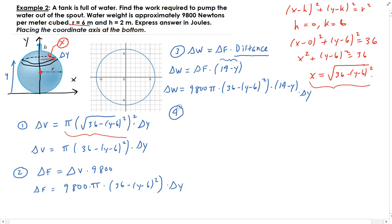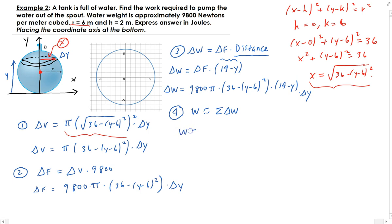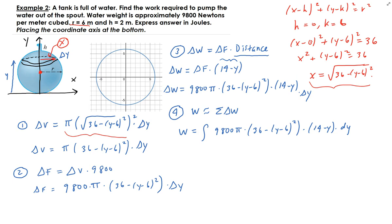The total work is approximately the sum of all the incremental work contributions. Taking the limit of that sum translates to an integral by Riemann theory. So the total work is the integral of 9800π(36 − (y − 6)²)(14 − y) dy. Since we placed the coordinate axis at the bottom of the tank, the bounds go from 0 to 12, covering the full height of the spherical tank.